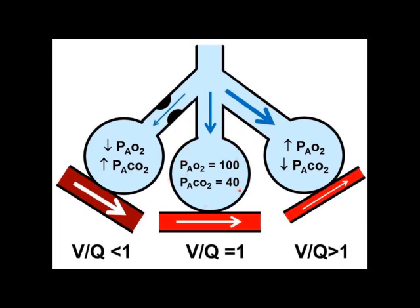There are only two possible types of VQ abnormalities from normal: VQ greater than 1 or VQ less than 1. If VQ is greater than 1, more oxygen comes in and less is removed, so alveolar oxygen will be greater than 100. Less CO2 comes in and more is removed, so PCO2 will be less than 40. For VQ less than 1, it's the opposite: less oxygen coming in, more removed, so alveolar O2 is below 100. PCO2 will be greater than 40.